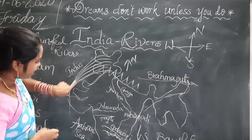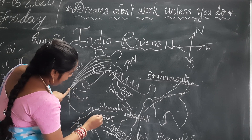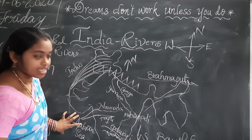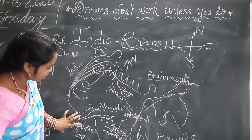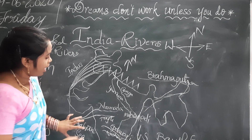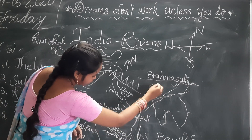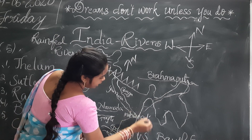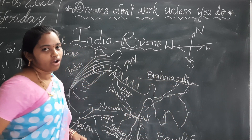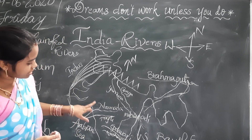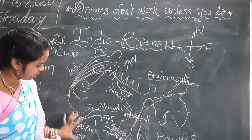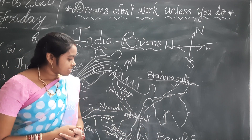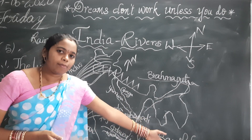The Indus, Narmada, and Tapti rivers drain into the Arabian Sea. The Ganga, Yamuna, Brahmaputra, Godavari, Krishna, and Kaveri — these rivers drain into the Bay of Bengal. So Narmada and Tapti empty into the Arabian Sea, while most other rivers empty into the Bay of Bengal.